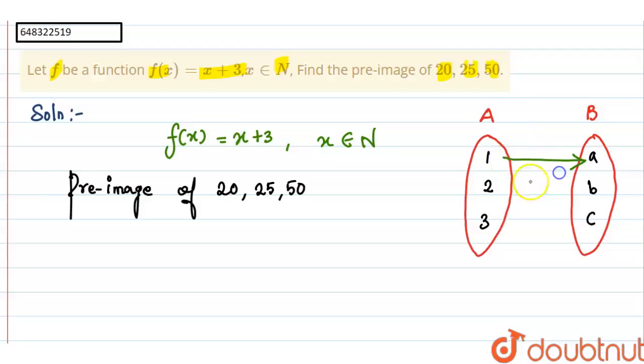It's mapping from A to B: 1 to A, 2 to B, 3 to C. This is mapping from A to B. So here, this is image, means codomain.